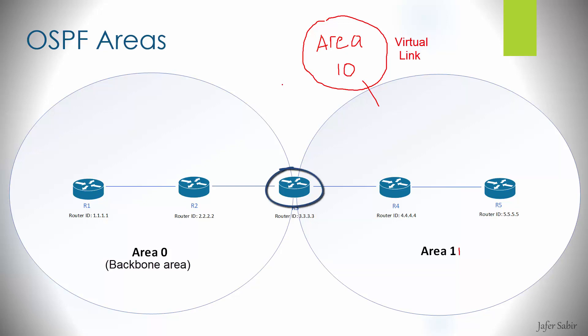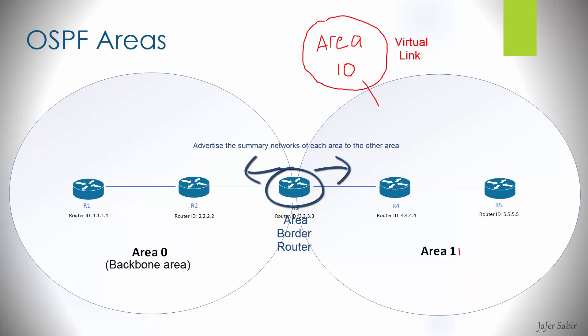What connects all these areas together is known as an Area Border Router, or ABR. An ABR is a router with interfaces connected into at least two different OSPF areas, including the backbone area, and it holds the full topology information about each area it is connected to — a copy of the link state database for each. The ABR advertises subnets about each area to other areas, but crucially it summarizes the network, advertising the summary network of Area 0 to Area 1.